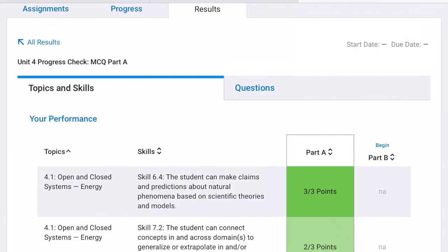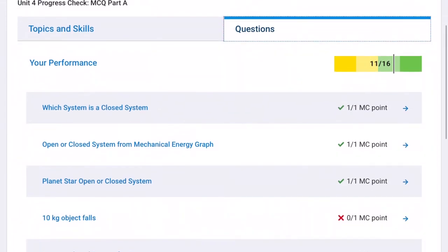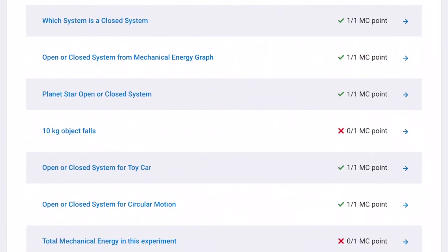But you want to see the specific question, so you're going to click on questions. And now you can see your performance, and this is the question stem, so you can see which one she got wrong. So the 10 kilogram object falls that one she got wrong. So click on the name of the question there.